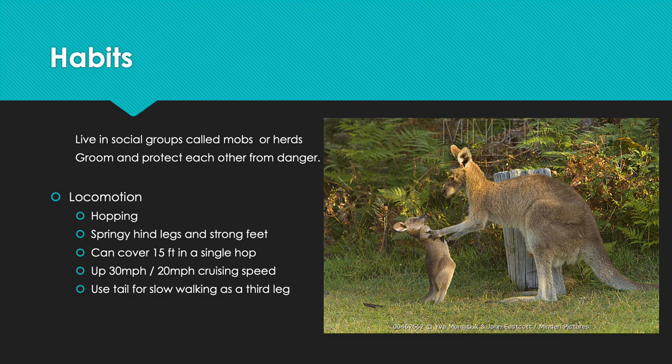Regarding communication, male kangaroos make a hissing sound and toss their heads before beginning to fight, possibly warning other males to get ready. Eastern kangaroos communicate with a gentle clucking noise and will cough when alarmed or angry. They also stomp on the ground and possibly use chemical signals to communicate, as most other mammal species do.